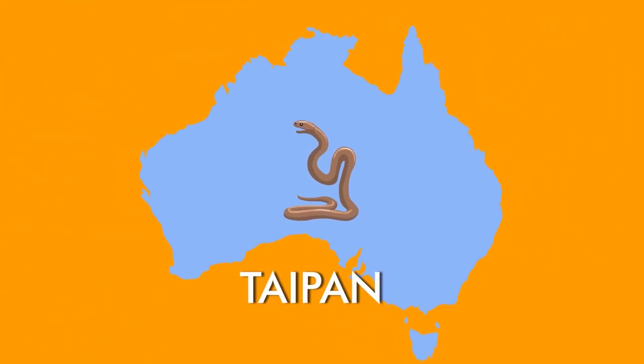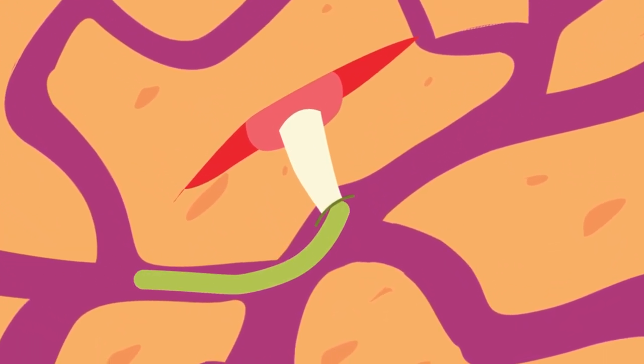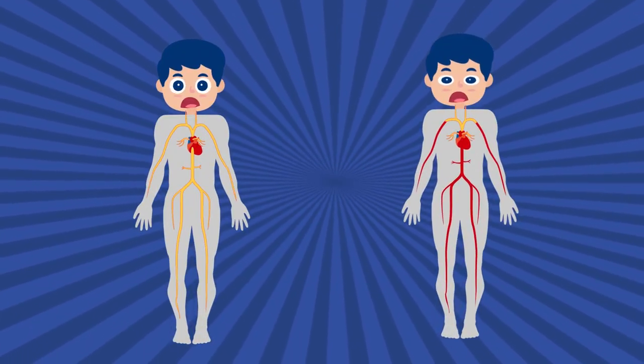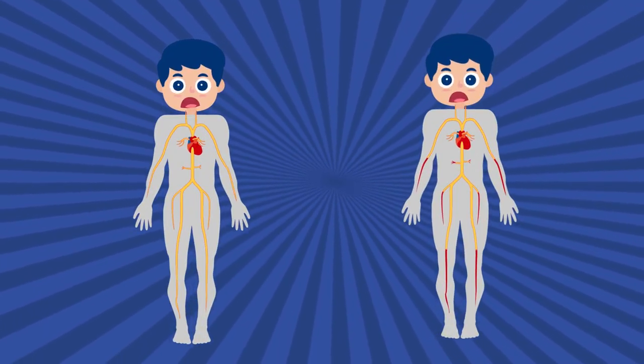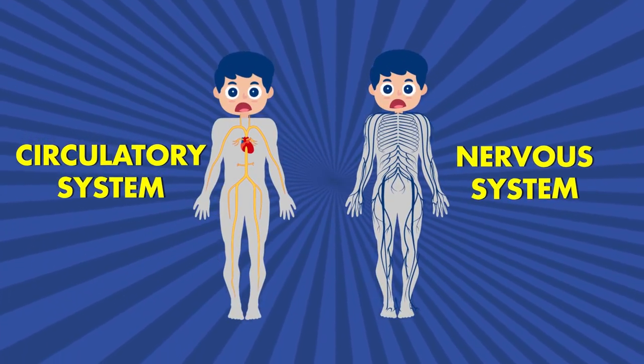When a venomous snake bites you, like the infamous inland taipan snake found in Australia, its teeth sink deep into your skin, releasing a toxic substance into your bloodstream. Depending on the snake and the type of venom it releases, their effects will vary. But it's essentially all bad news, especially for your circulatory and nervous systems.